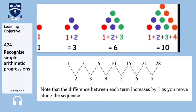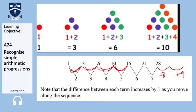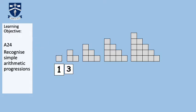Note that the difference between each term increases by 1 as you move along the sequence. If I write it as a sequence — 1, 3, 6, 10, 15, 21, 28 — and look at the differences: the first difference is 2, the second is 3, the third is 4, the fourth is 5, and so on. Each time you are adding the next consecutive number. For the next one you would add 8, then add 9. You can also look at triangle numbers using squares — 1, 3, 6, 10 — or using dots, as we have done.